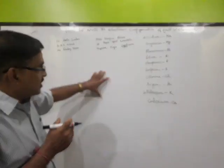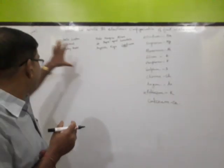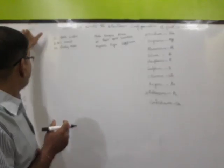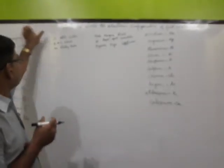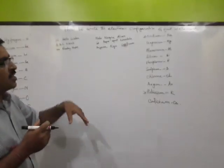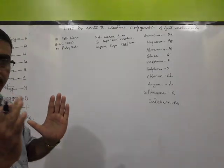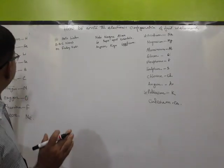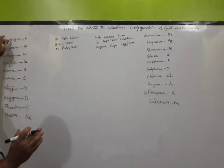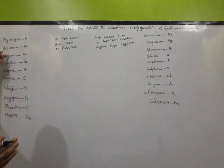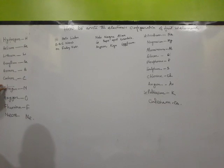These are the first 20 elements. The first names are: hydrogen, helium, lithium, boron, carbon, nitrogen, oxygen, fluorine, neon. How do you learn this?